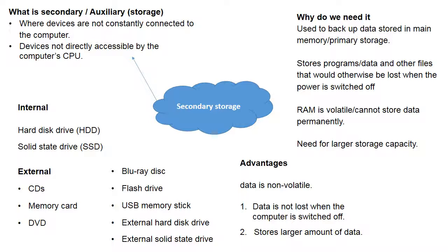When you plug a USB pen in, it uses a universal serial bus to take that flash drive's data to the CPU, so it has to be transferred some way. Why do we need it? We use it for backup and to store data from primary memory - programs, data, or other files that would otherwise be lost when we turn off the computer. If you've made a picture in Paint and want to save it, it will be active in RAM but lost when powered off, so that's where secondary storage comes in.